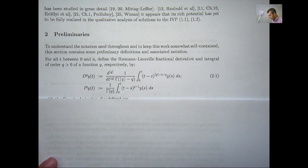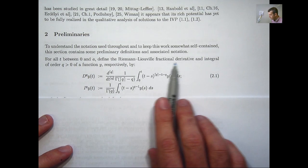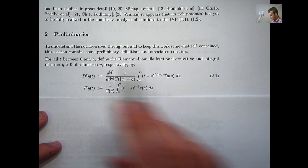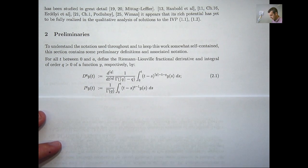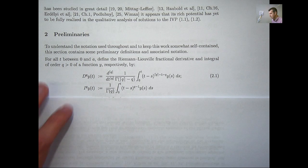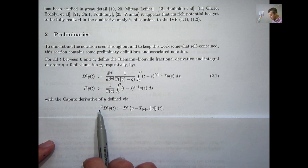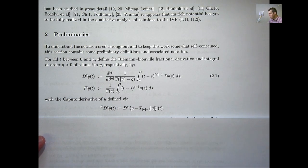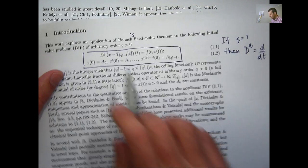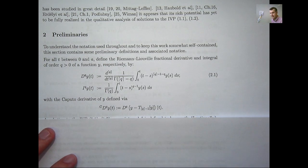A few preliminaries to keep this presentation somewhat self-contained. We define the Riemann-Liouville fractional derivative and integral of order q of some function y respectively by the following. If q is 1, this just becomes the regular derivative, and if q is 1 in the integral, this is just the regular Riemann integral. Sometimes to save space, we use a superscript c and call that the Caputo derivative, written as c·d^q. I might switch between the two notations in this presentation.